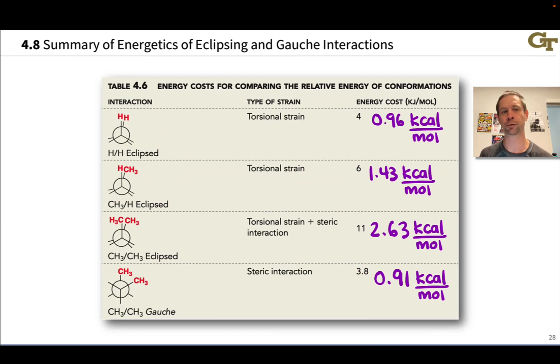Four kilojoules per mole for an HH eclipsing interaction, for example, and 3.8 kilojoules per mole for a CH3-CH3 gauche interaction.